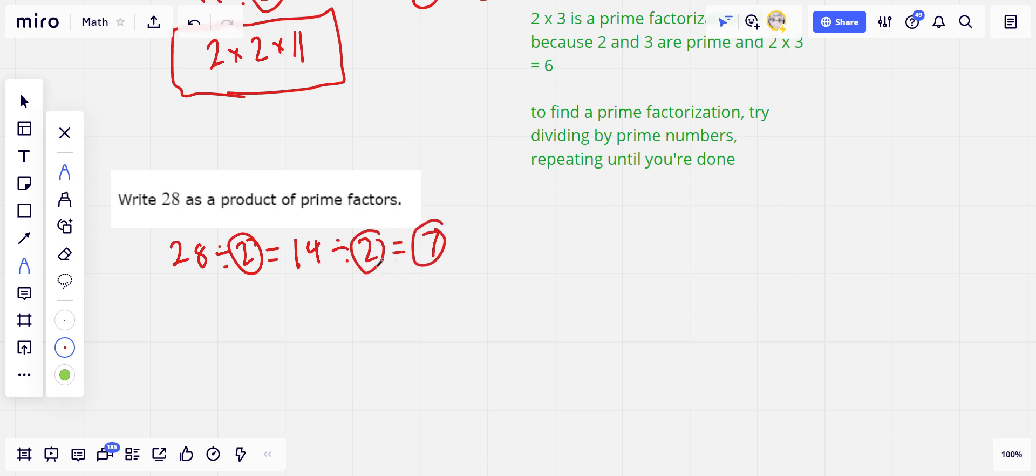So we got 2 times 2 times 7 for our prime factorization. If you multiply all those together again, it should come out to 28. You can try that on your own and see if it really works. So that is how to do a prime factorization.